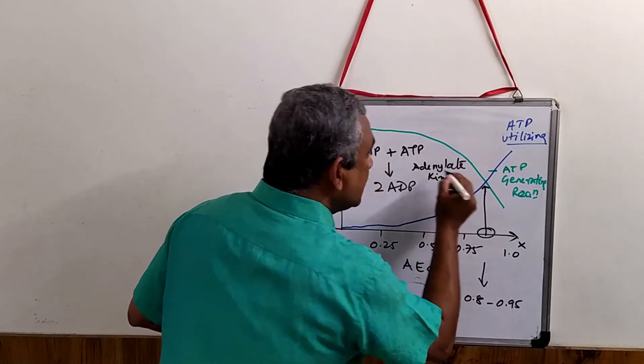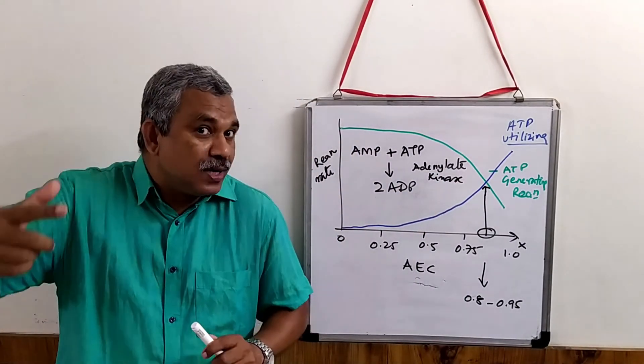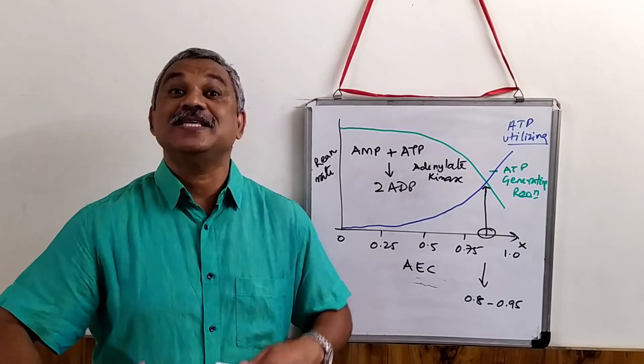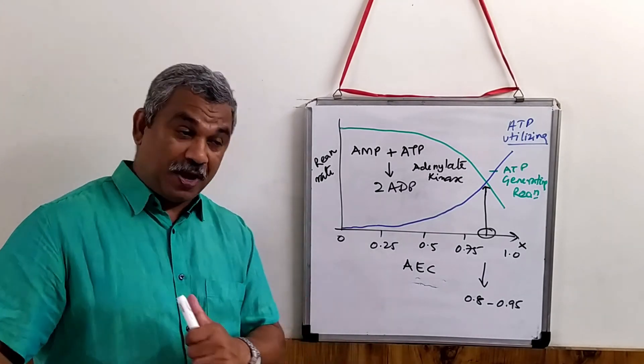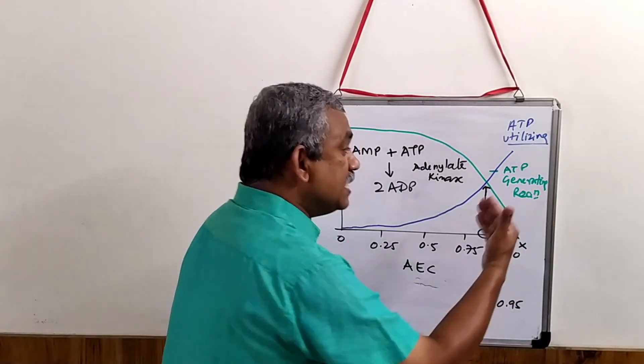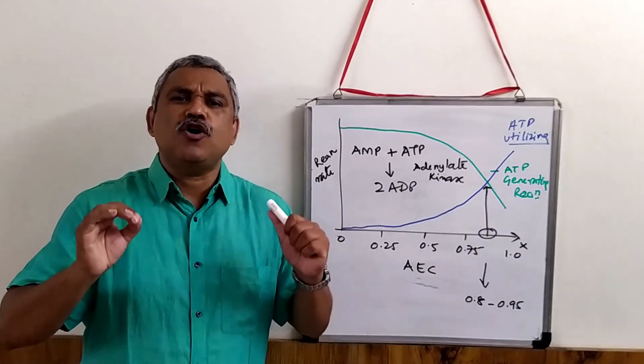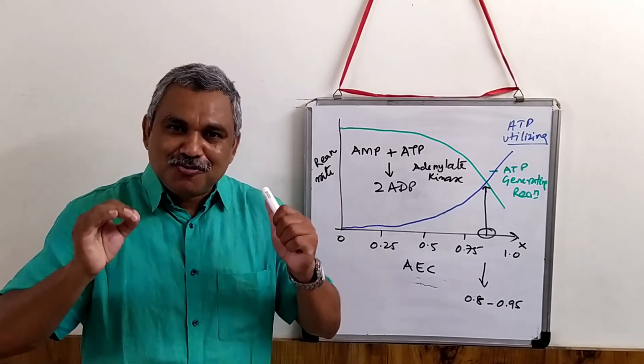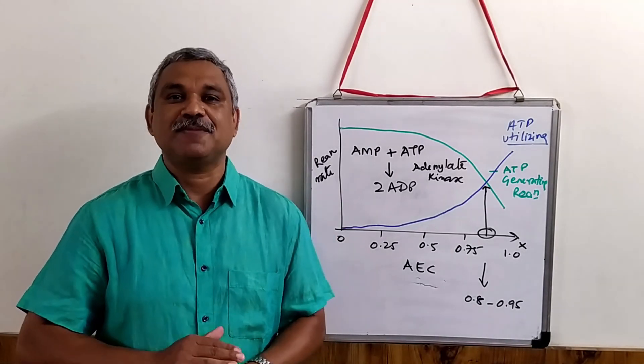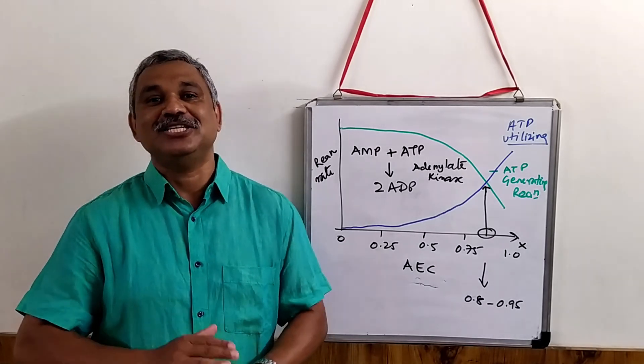So this reaction will ensure that the ATP cycle is on. And the cell is able to fluctuate from these energy-utilizing reactions to energy-generating reactions depending on the moment-to-moment fluctuation of a cell. This is the concept of adenylate energy charge.